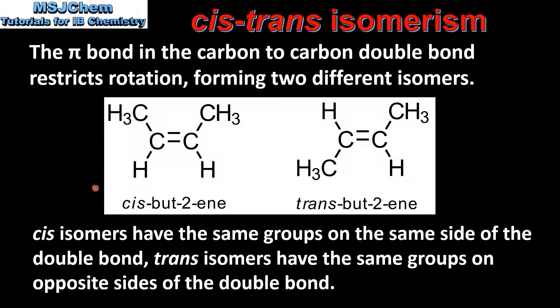If we look at the cis-isomer, it has two CH₃ groups on the same side of the double bond, and the trans-isomer has two CH₃ groups on opposite sides of the double bond.